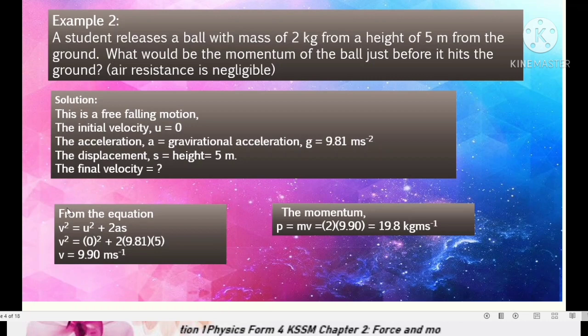Because we want to determine the momentum, there must be mass and velocity. So how to determine the velocity? We can use the formula for the free fall case, the linear motion equation. From here, we use V square equals U square plus 2 AS. Initial velocity 0. Fall down. 2 times 9.81 times 5. So we get V equals to 9.90 meter second to the power negative 1. The momentum P equals to mv. That's 2 times 9.90 equals to 19.8 kg meter second to the power negative 1.